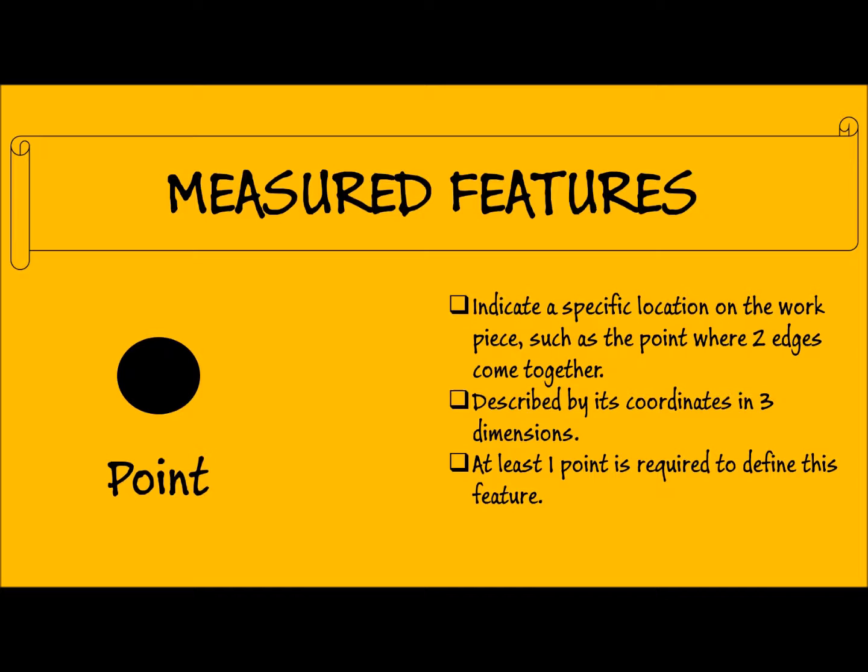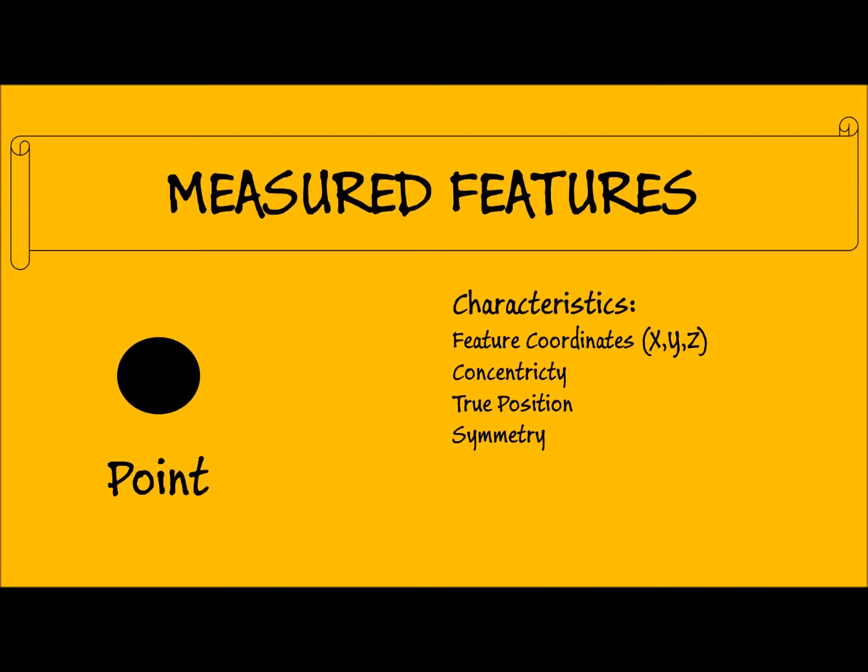At a minimum, one data point is needed to define a point feature. The characteristics given are the feature coordinates, concentricity, true position, and symmetry.